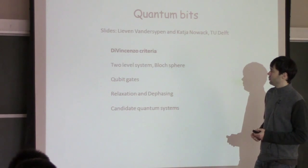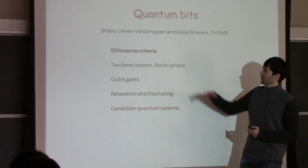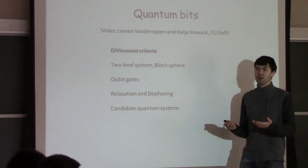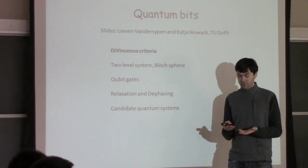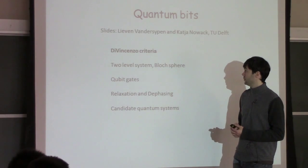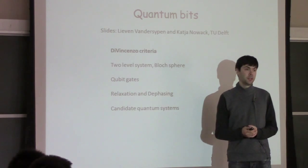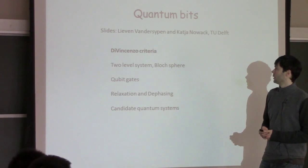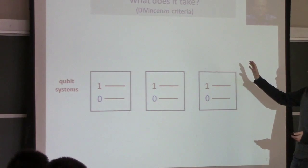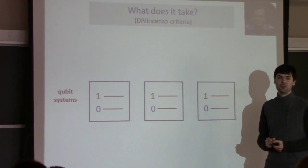This will be our plan for today. The entire lecture will be subdivided into discussing the various DiVincenzo criteria, of which the main ones are five. They lay out the basic requirements: what does your physical system have to fulfill to have a chance at becoming a quantum computer? We will divide the lecture into these criteria and look at the potential systems at the end. The DiVincenzo criteria are a very important and ubiquitous concept in the field.